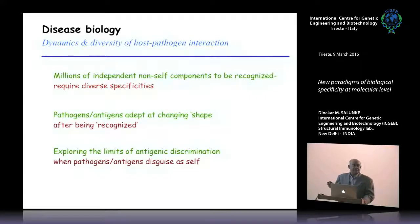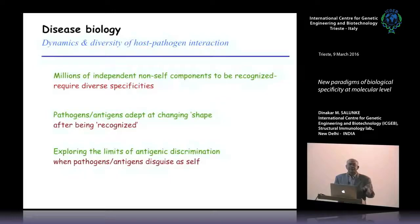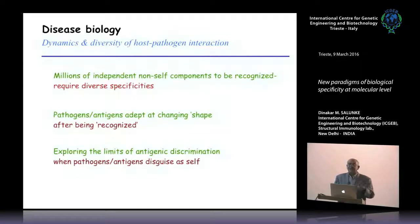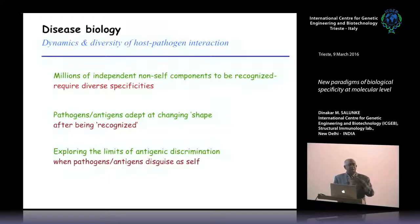How does the immune system handle this? Even if a foreign pathogen is specifically recognized, there is no reason to believe its shape remains static, because structural changes are possible in molecular structures of living systems. So even if it is recognized, it can change shape and you would need a different antibody — because by the original lock-and-key logic, a changed shape is a new shape requiring a new response.